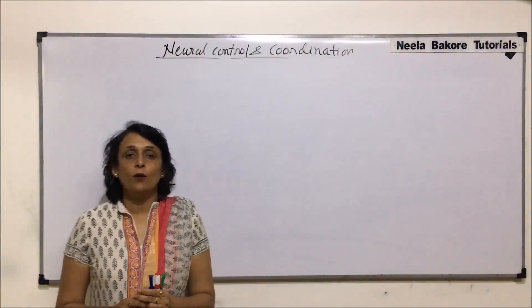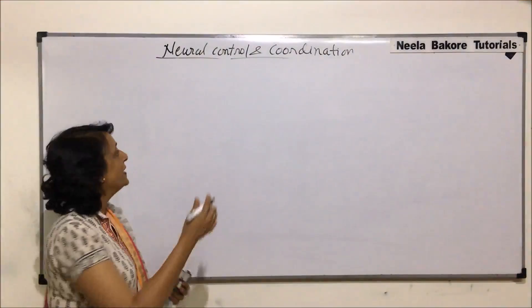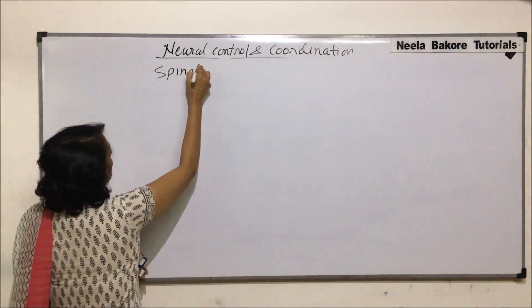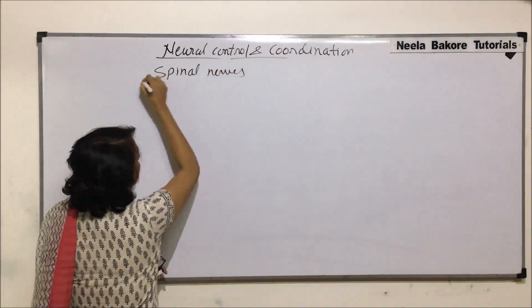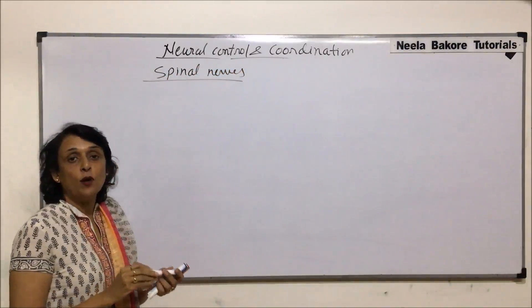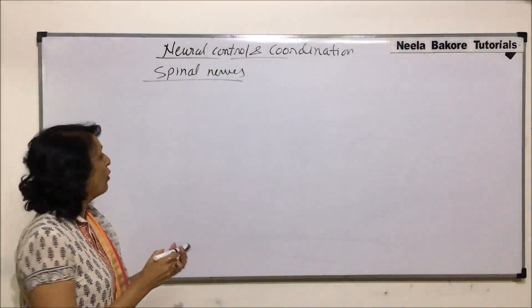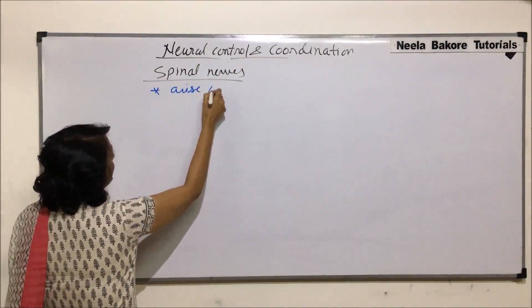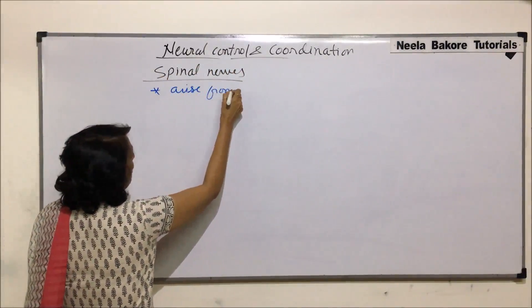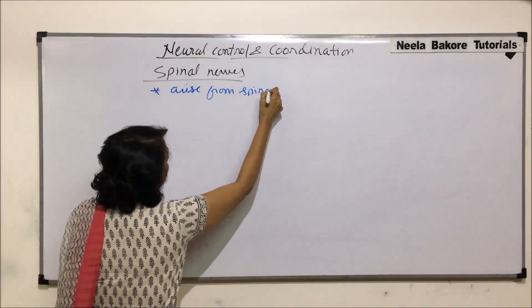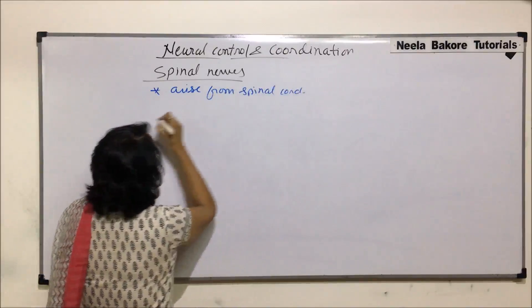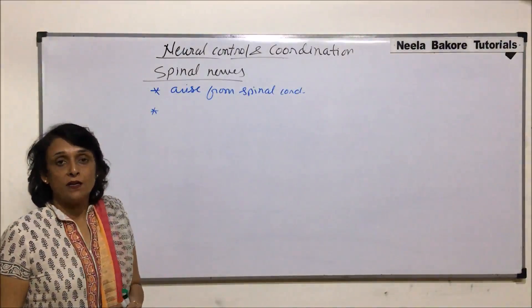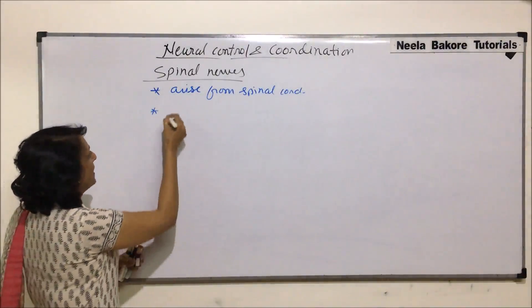Let us now talk about the spinal nerves. Spinal nerves, as the name tells us, arise from the spinal cord. All of them arise from the spinal cord. There are 31 pairs of spinal nerves.